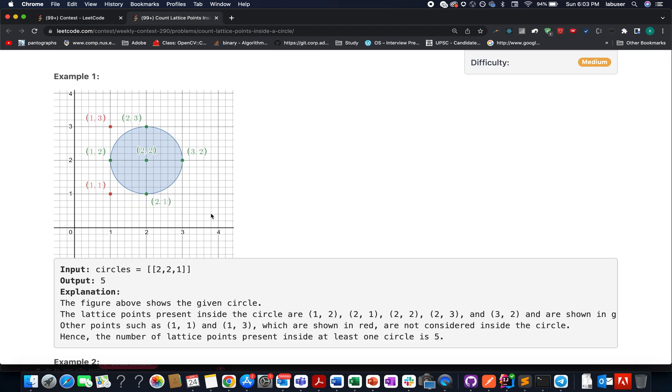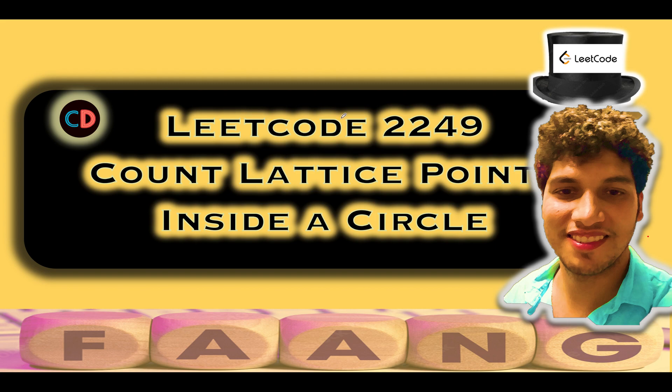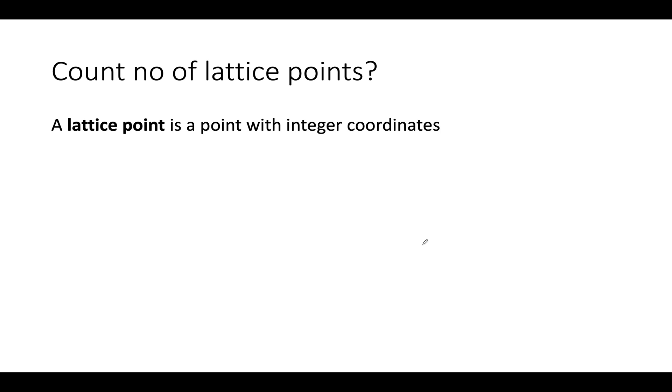They have provided us with an example. I will be walking you through this example as well as the algorithm. Let's hop on to LeetCode 2249 Count Lattice Points Inside the Circle. A lattice point is a point that has integer coordinates - this is the biggest hint specified in the question. If people took this hint properly, they would have been able to solve this question.